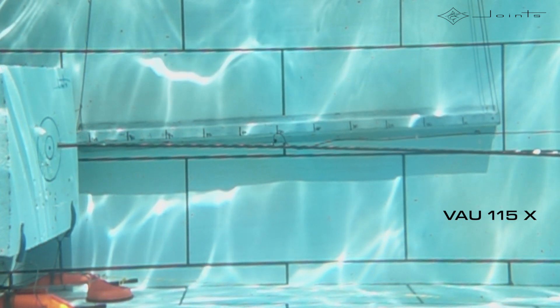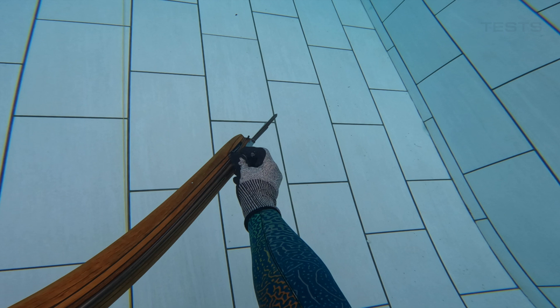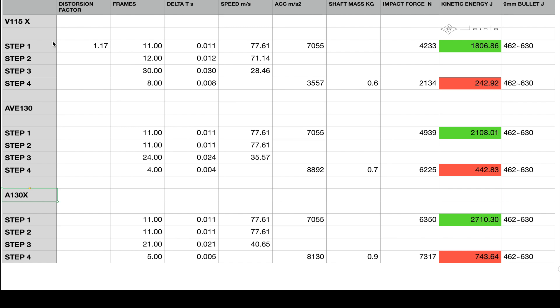All right, let's go into the numbers now. Here's the spreadsheet I put together after analyzing all the data. In the rows we've got the three spear guns from the Vamo to the Ave Extreme, and then the four measurement phases - step one, two, three, and four for each gun. In the columns we've got the number of frames, the delta t in seconds, the speed in meters per second, the acceleration and deceleration at the exit of the muzzle and of course on impact. Here we have the shaft mass, here the impact force in newtons, and the kinetic energy at the muzzle and the target.